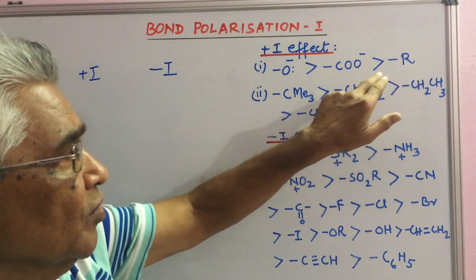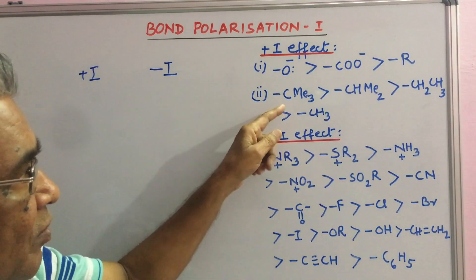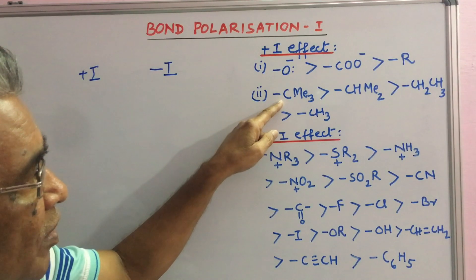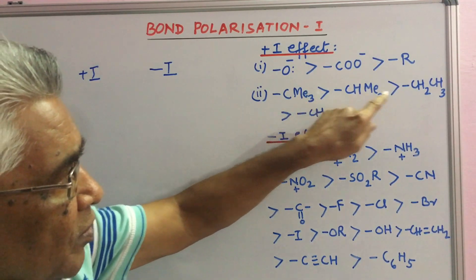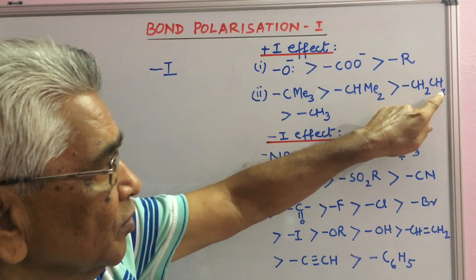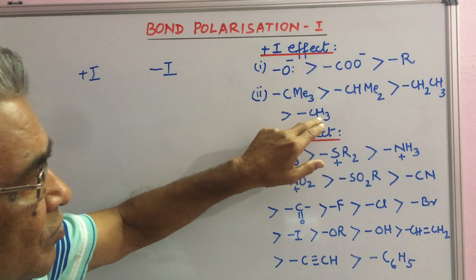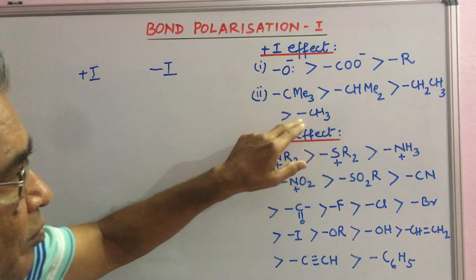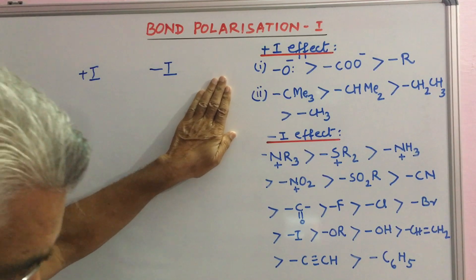Amongst alkyl groups, this is the strongest having three methyl groups, then two methyl groups, then ethyl with only one methyl group, and the weakest is methyl with three hydrogens. They all have plus I effect.